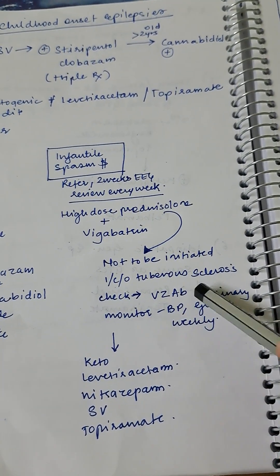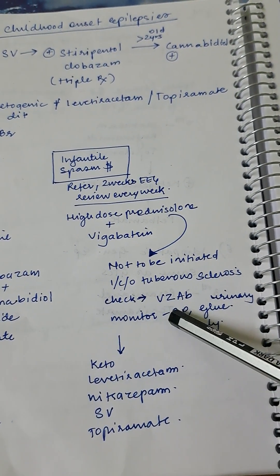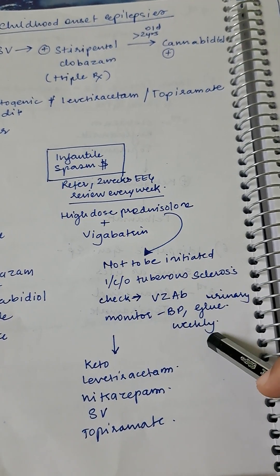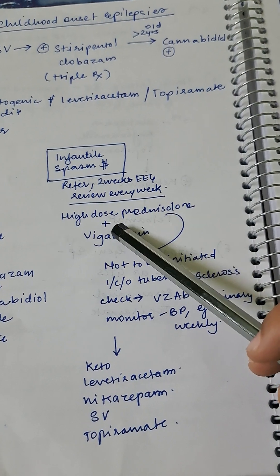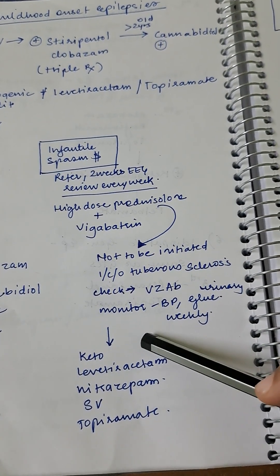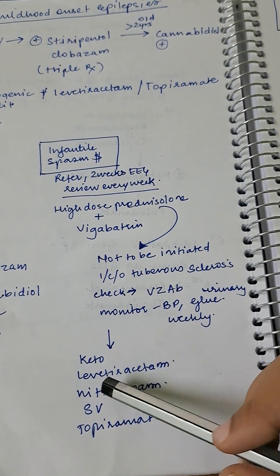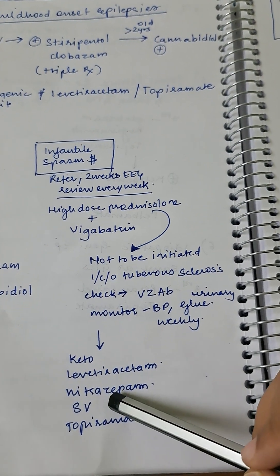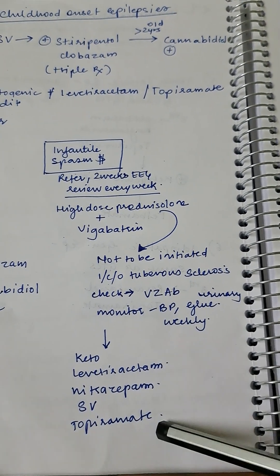You will monitor the blood pressure and monitor the urine glucose weekly. If this does not suffice, then you will give ketogenic diet to such patient, then levetiracetam, nitrazepam, sodium valproate, also topiramate can be tried.